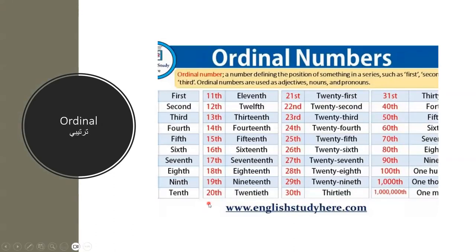We count until ninth, then 20th, 21st, 22nd, 23rd, 24th, 25th, 26th, 27th, 28th, 29th, 30th, 31st, 33rd, 34th, 43rd, 44th — like this. These are ordinal numbers.